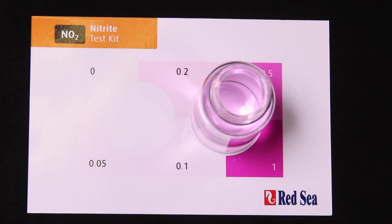All right, now let's look at our nitrite test results. I would say that our nitrite reading is definitely between 0.2 and 0.5. I would probably estimate about 0.3 to 0.4 parts per million of nitrite. Which again tells us that our tank is still in the cycling process.